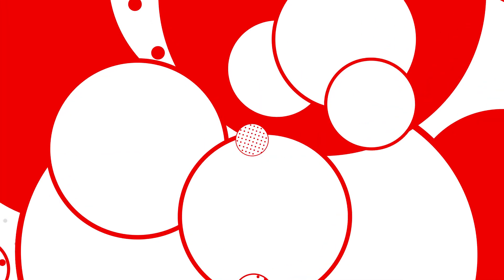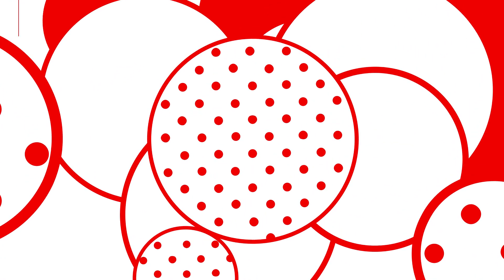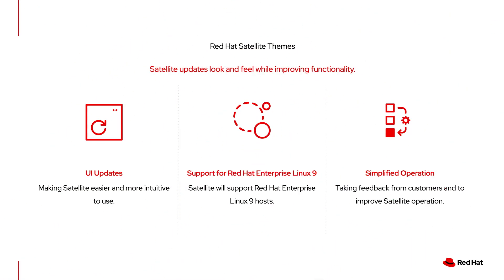Satellite 6.11 became generally available in June of 2022. It builds on top of the backend work implemented in Satellite 6.10, taking advantage of technical updates to improve the experience of managing Red Hat Enterprise Linux hosts. There are three themes to this release.